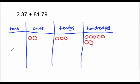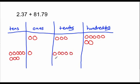Now I'm going to put that together with eighty-one and seventy-nine hundredths. I'll leave a little space so you can see that the numbers being added are separated. I draw eight tens, one one, seven tenths, and nine hundredths.